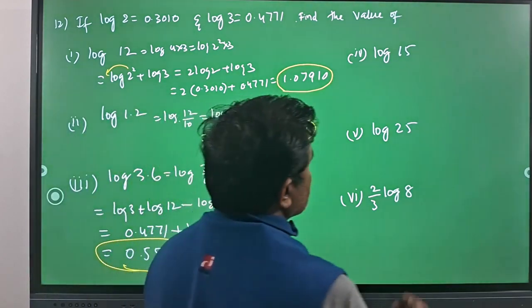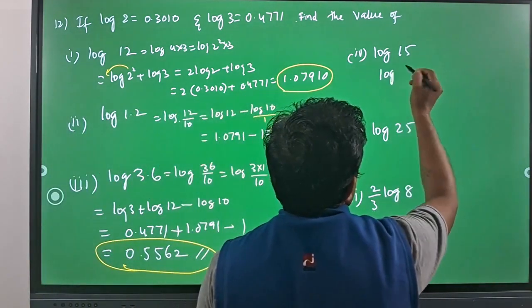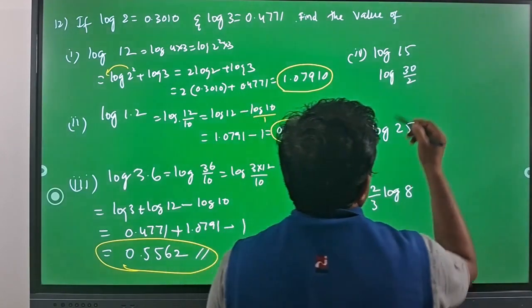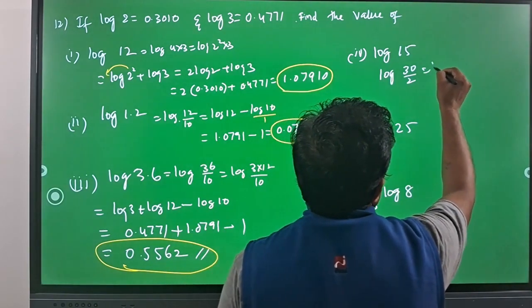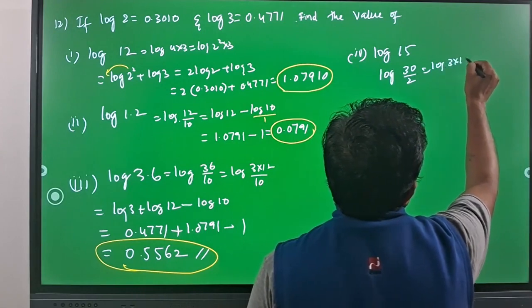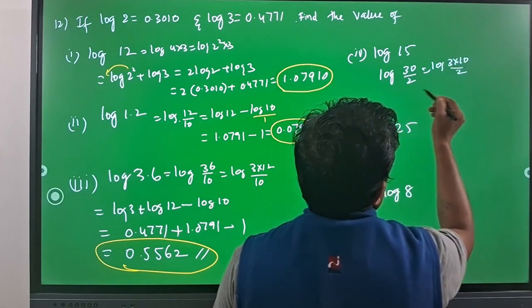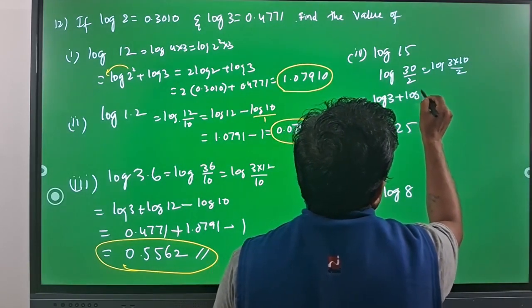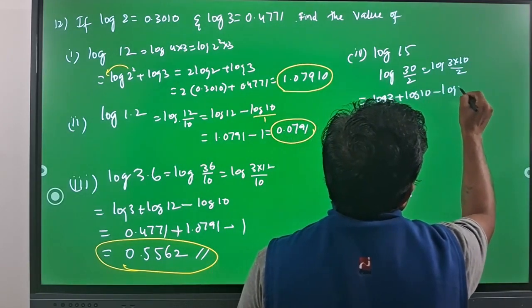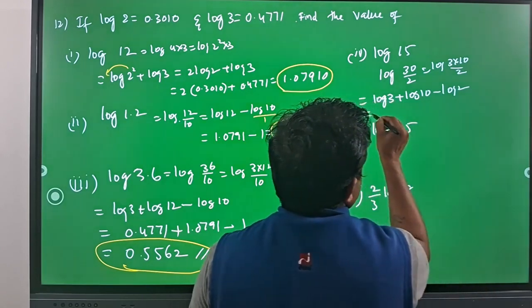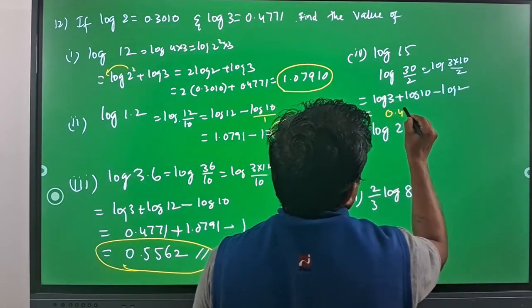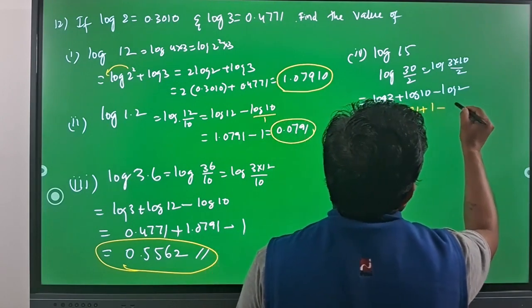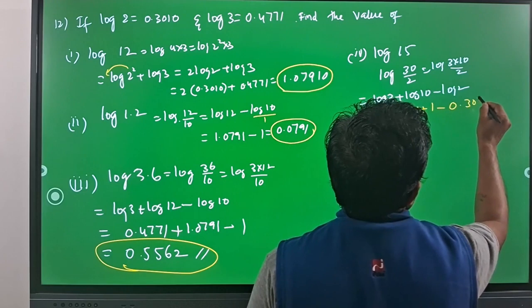Now come to log 15. Log 15 we can write as log 30 by 2, which in turn is log 3 into 10 by 2. Then if you split the logarithm, you will have log 3 plus log 10 minus log 2.